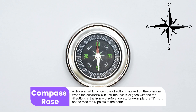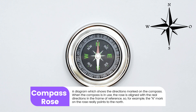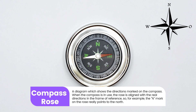18. Compass Rose: A diagram which shows the directions marked on the compass. When the compass is in use, the rose is aligned with the real directions in the frame of reference. So, for example, the N mark on the rose really points to the north.